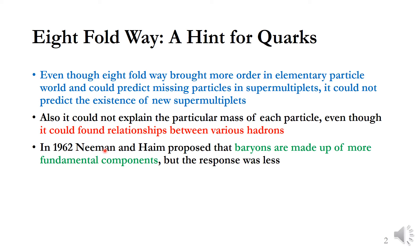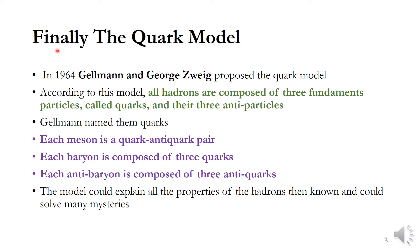In 1962, Neeman and Gell-Mann proposed that the hadrons are made of more fundamental components, but the response was less from the scientific community. In 1964, Gell-Mann and George Zweig proposed the quark model. According to this model, all hadrons are composed of three fundamental particles called quarks, and their three anti-particles.